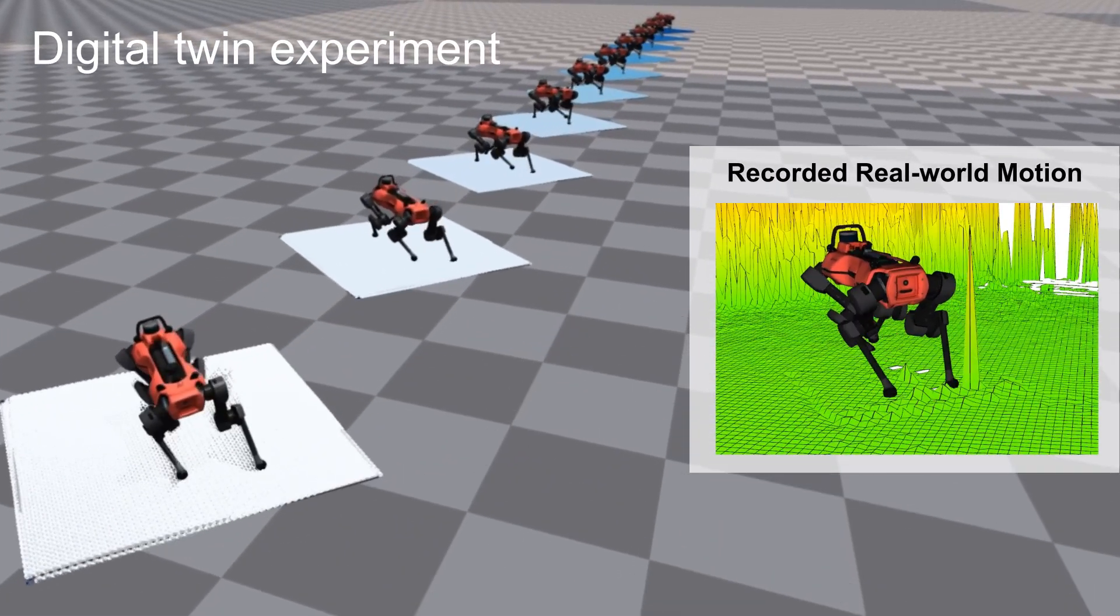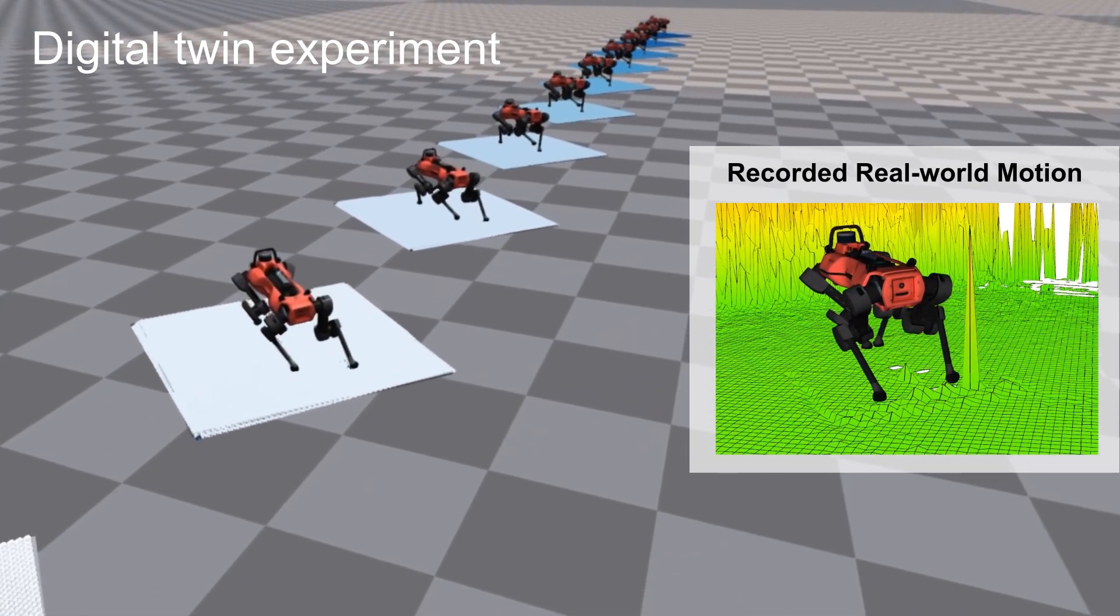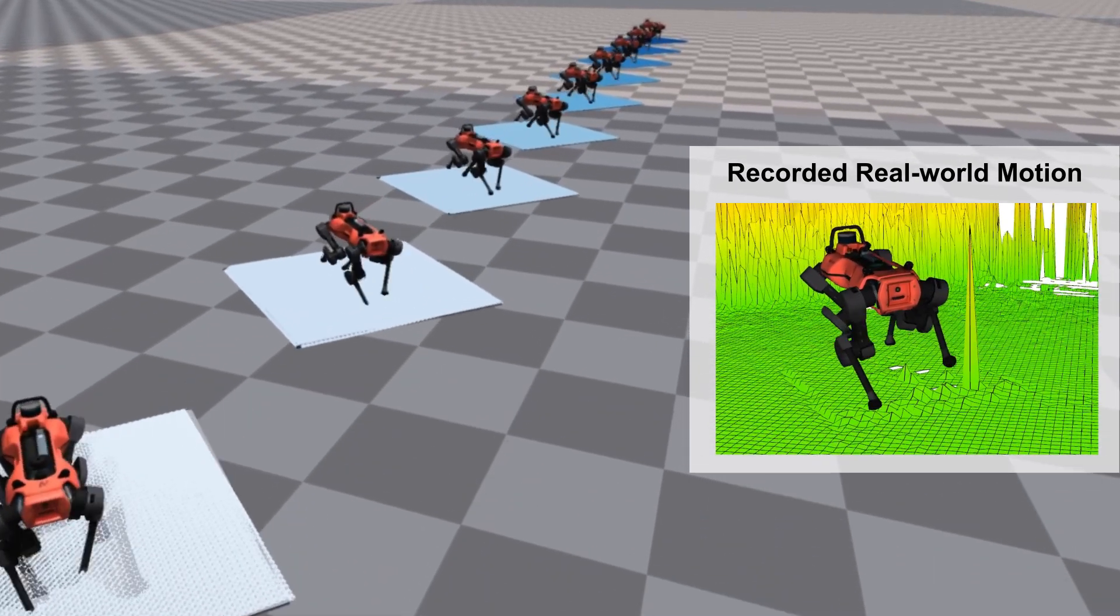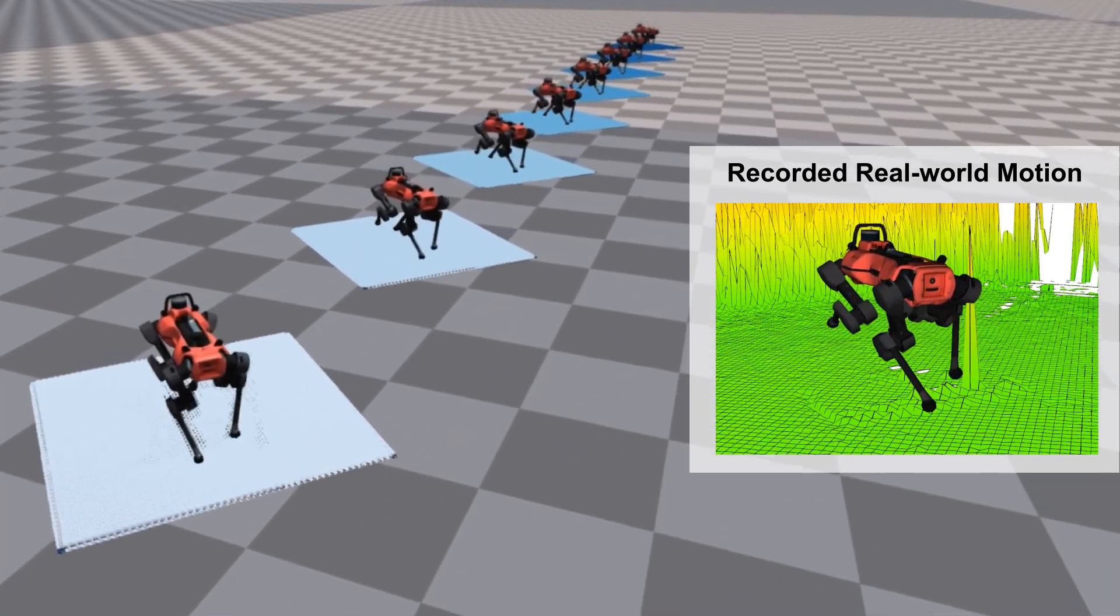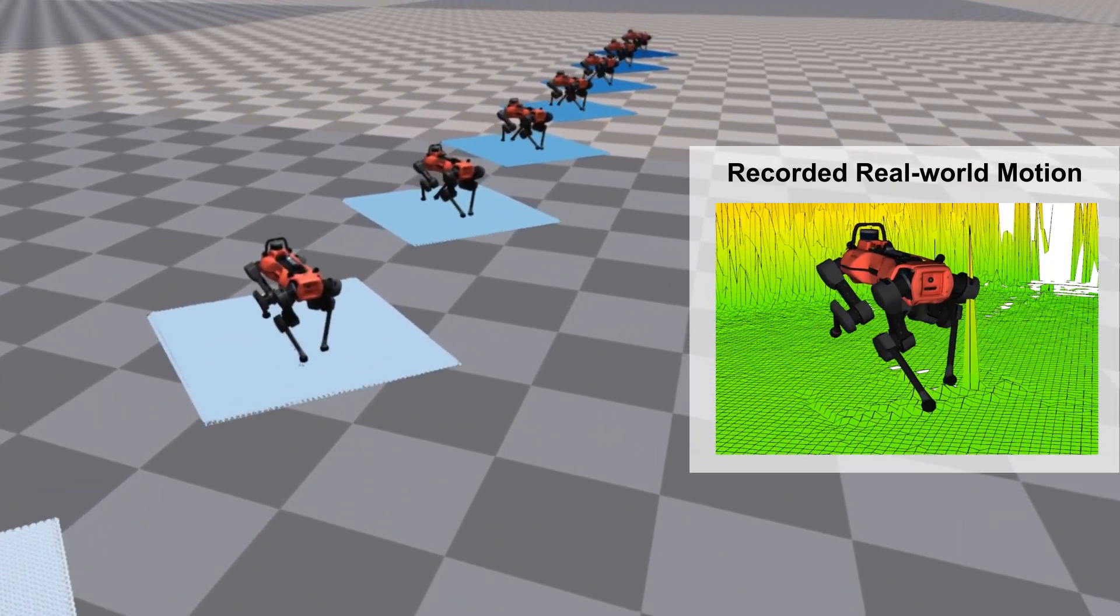To estimate the prediction error in real-world, we use a digital twin experiment to compare whether the real-world prediction will result in similar motion when rolling out the same action in simulation.